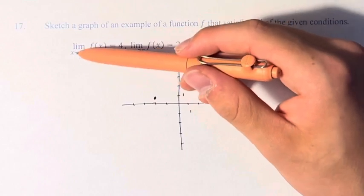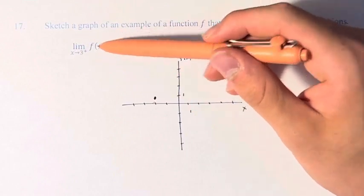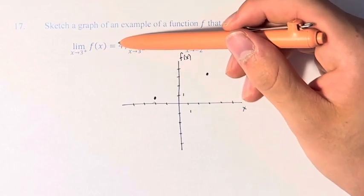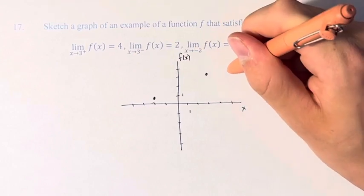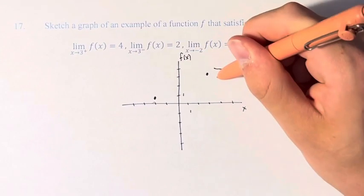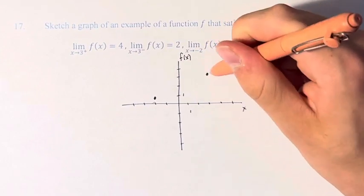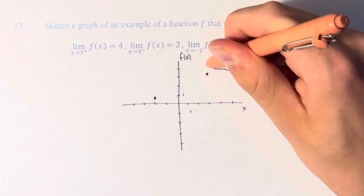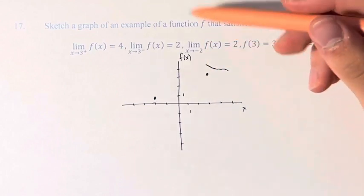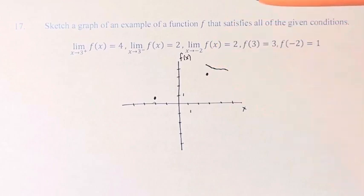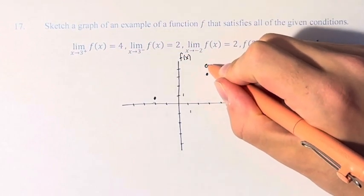So the limit as x approaches 3 from the right is equal to 4. So the function is going, and then as we get closer and closer to x is equal to 3, it approaches a value of 4, but the function isn't equal to 4 at x is equal to 3, it's equal to 3, so we have an open circle.